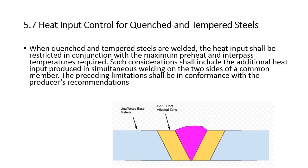Heat input control for quenched and tempered steels. When quenched and tempered steels are welded, the heat input shall be restricted in conjunction with maximum preheat and interpass temperatures required. This is out of AWS D1.1, telling us we need to keep track of heat input control for quenched and tempered steels because if you don't, there could be serious consequences.